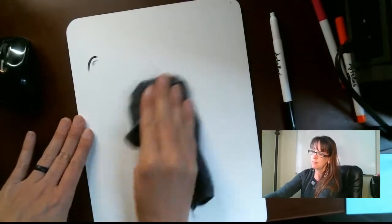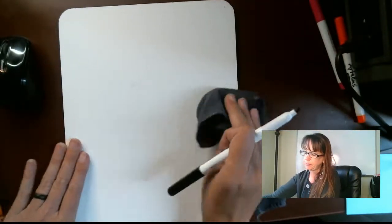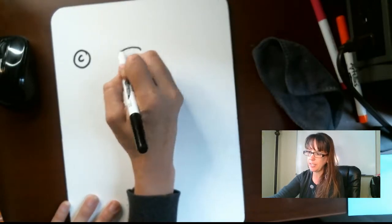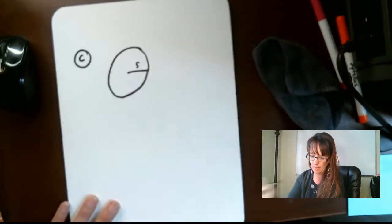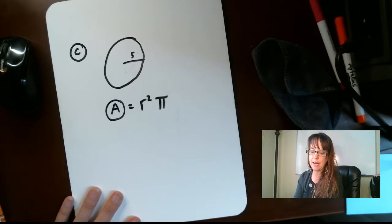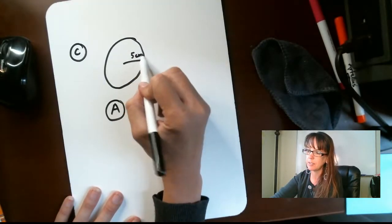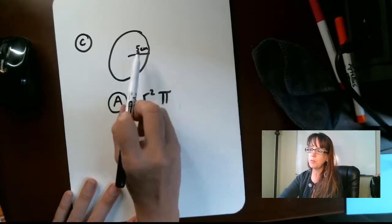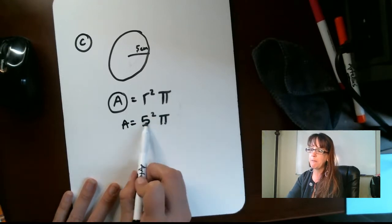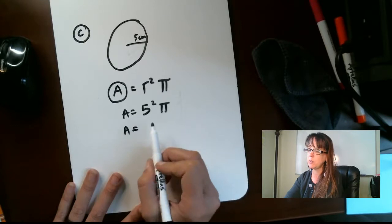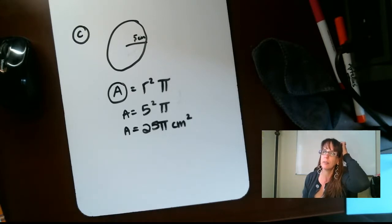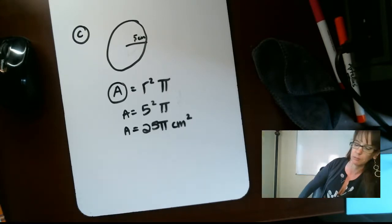For C, the radius of a circle is 5 centimeters — find the area. The area of a circle is the radius squared times pi. Area equals 5 squared times pi equals 25 pi centimeters squared. In this case you can leave the answer in terms of pi.